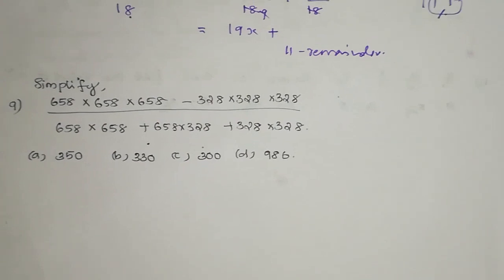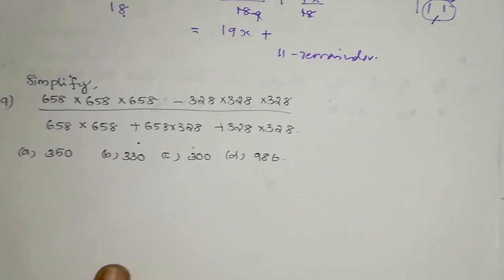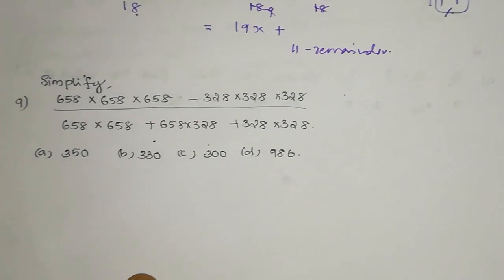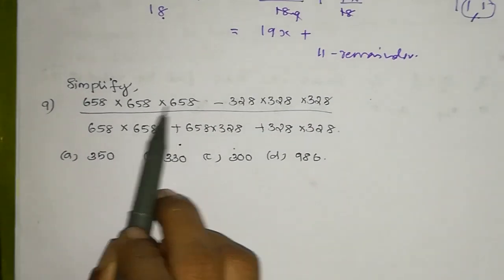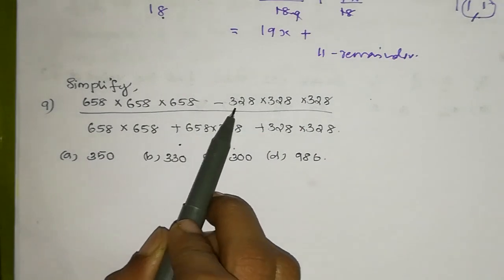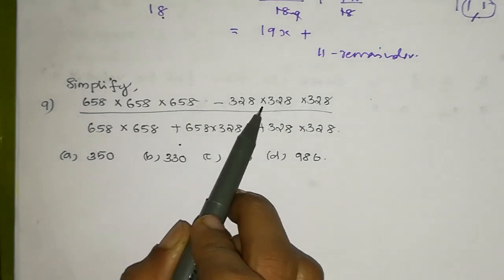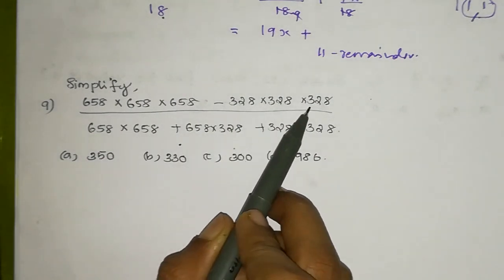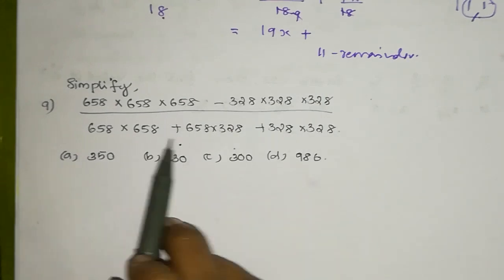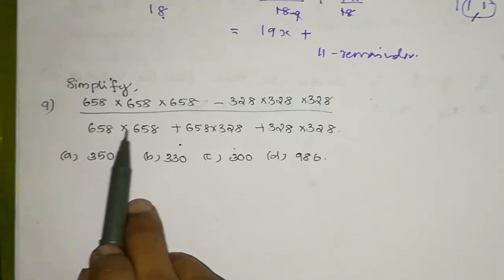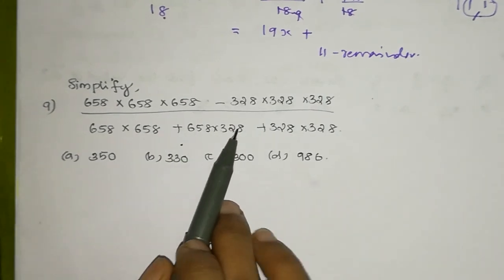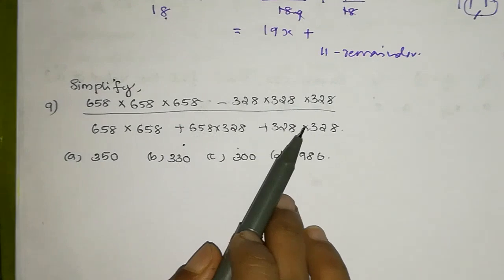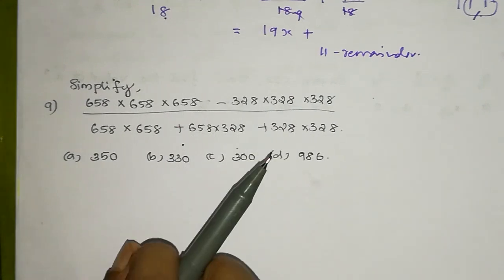Simplify: 658 plus 658 into 658 into 658 into 658 minus 328 into 328 divided by 658 into 658 into 658, plus 658 into 328 plus 328 into 328.